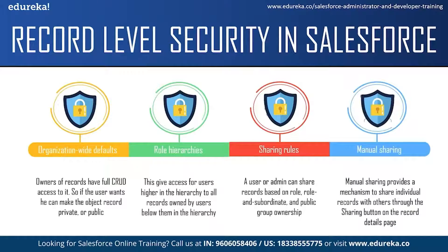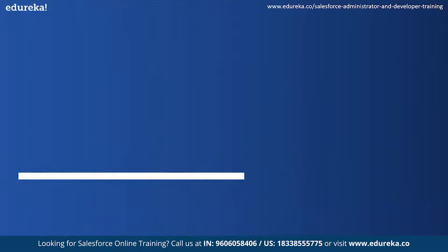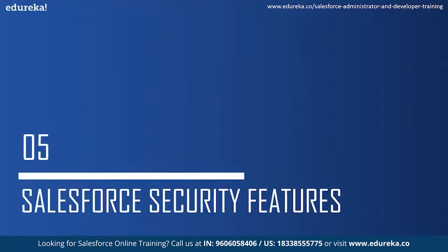The fourth way of managing record level access is manual sharing, which provides a mechanism to share individual records with others. This permission is accessed through the Sharing button on the record detail page, letting end users share individual records with each other.